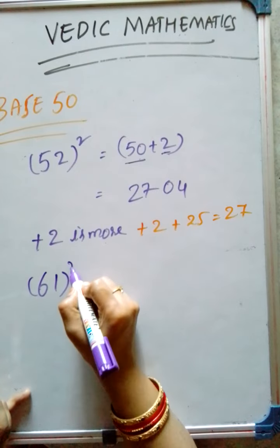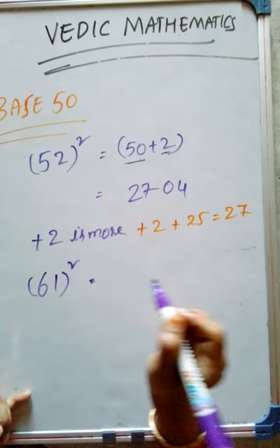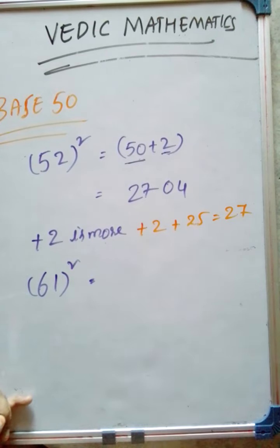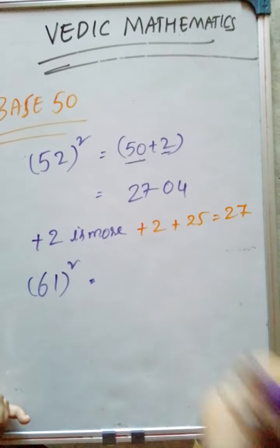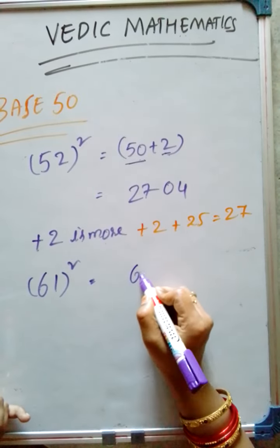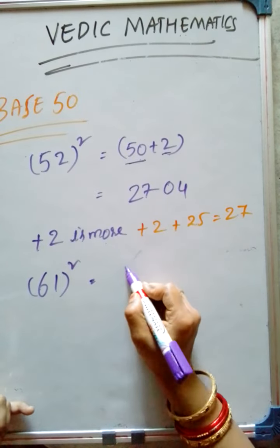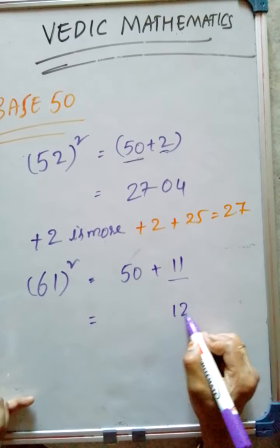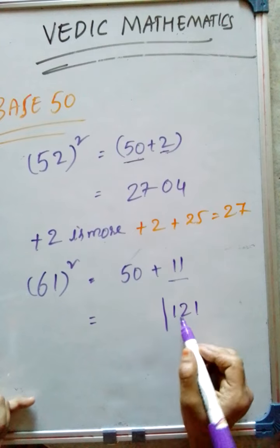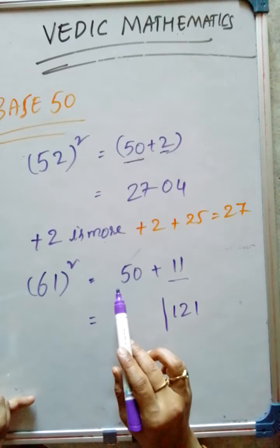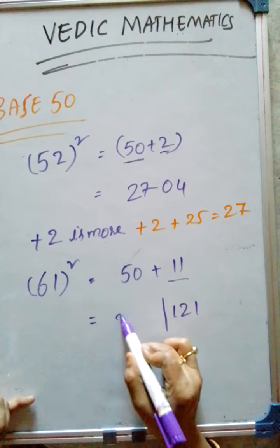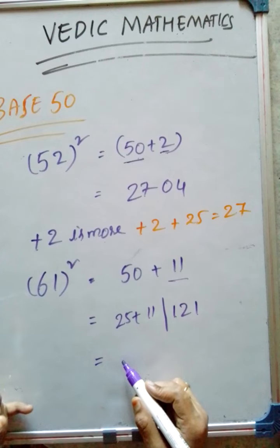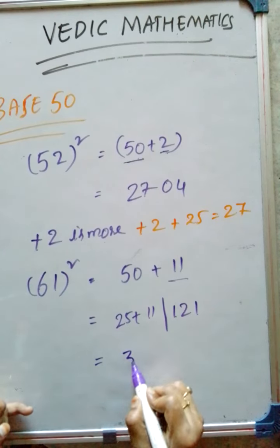With another example, 61 square. Here, how much it is greater from 50? That is nothing but 50 plus 11. So we have to add. First of all, what we have to do? We have to take 11 square — 121. And then, what we have to do? We have to add 25 plus 11. That is 36.